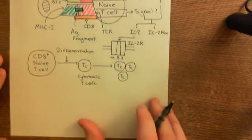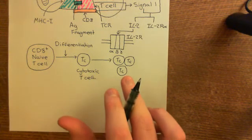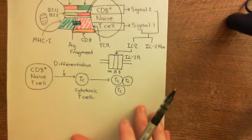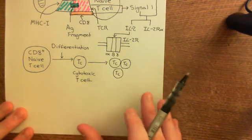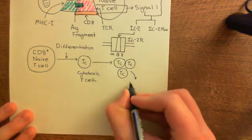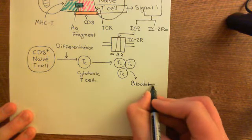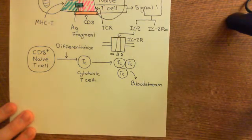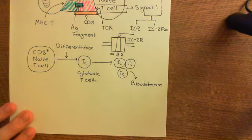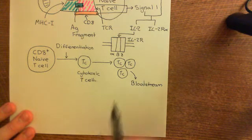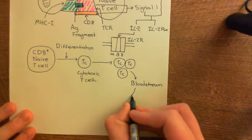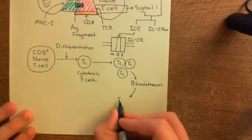These cytotoxic T-cells are all armed against this specific antigen fragment — they all have a T-cell receptor targeted against it. They will leave the lymph node, go into the bloodstream, and circulate for a while. Gradually they'll be moved out of the bloodstream by the endothelial cells of the blood vessels at the infected site, so at the site of infection the blood vessels will be recruiting leukocytes, and these cytotoxic T-lymphocytes will be moved from the blood into the interstitial fluid of the infected area.